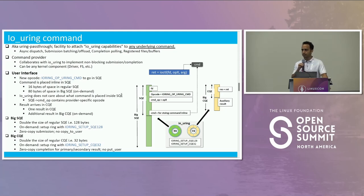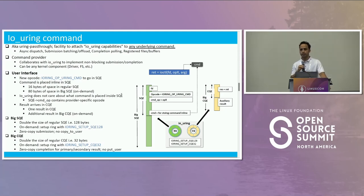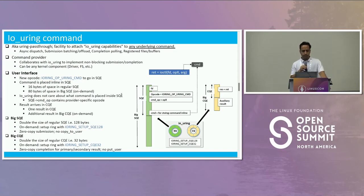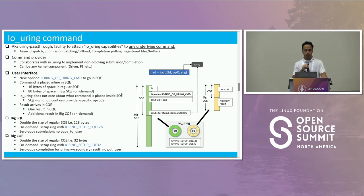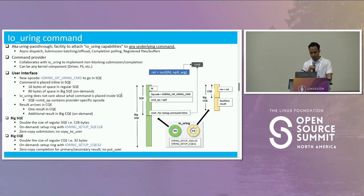If you want more than that, you say you want a big SQE, and then you will get 80 bytes of space. Big SQE is one more facility that got added along with this — both were developed together. As the application, you will place your command inside the SQE. io_uring doesn't care much about what is placed inside it. You supply the provider-specific opcode into the command op field, and that is all.